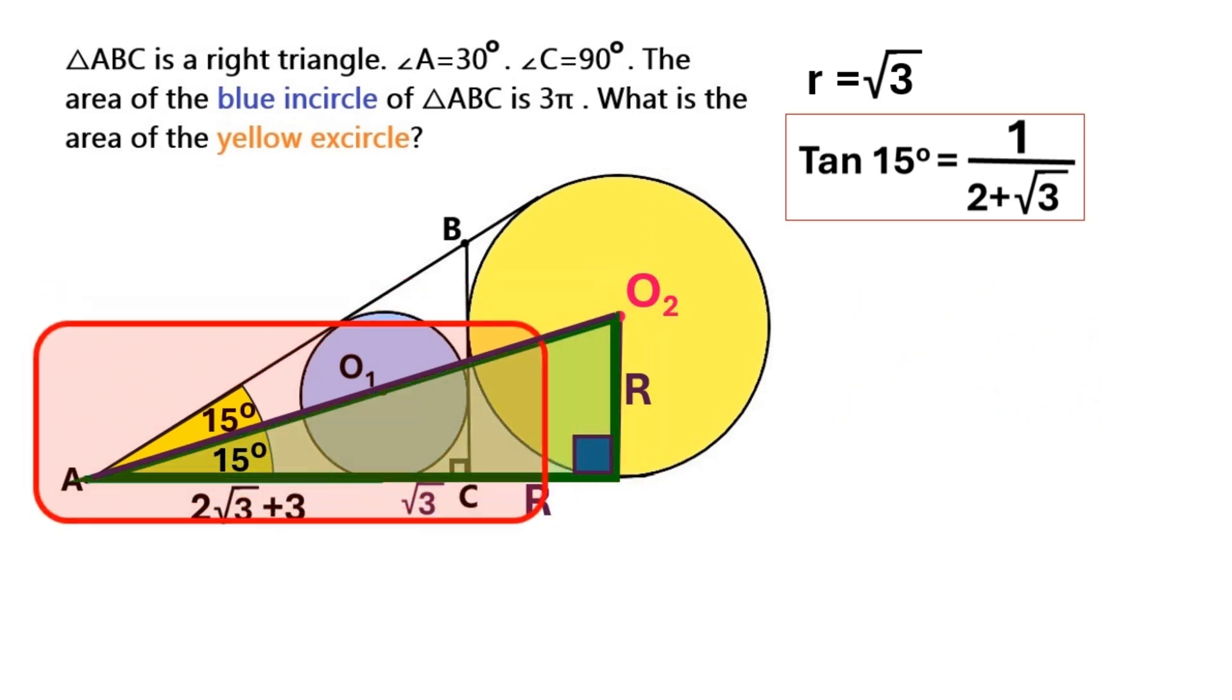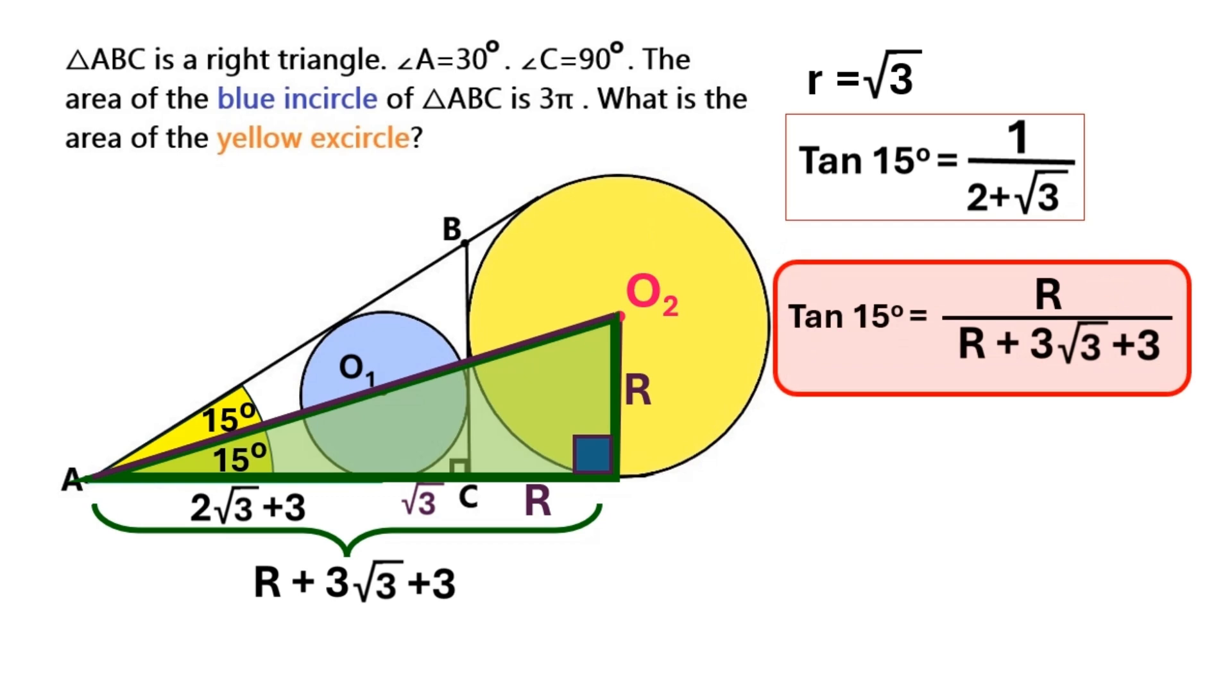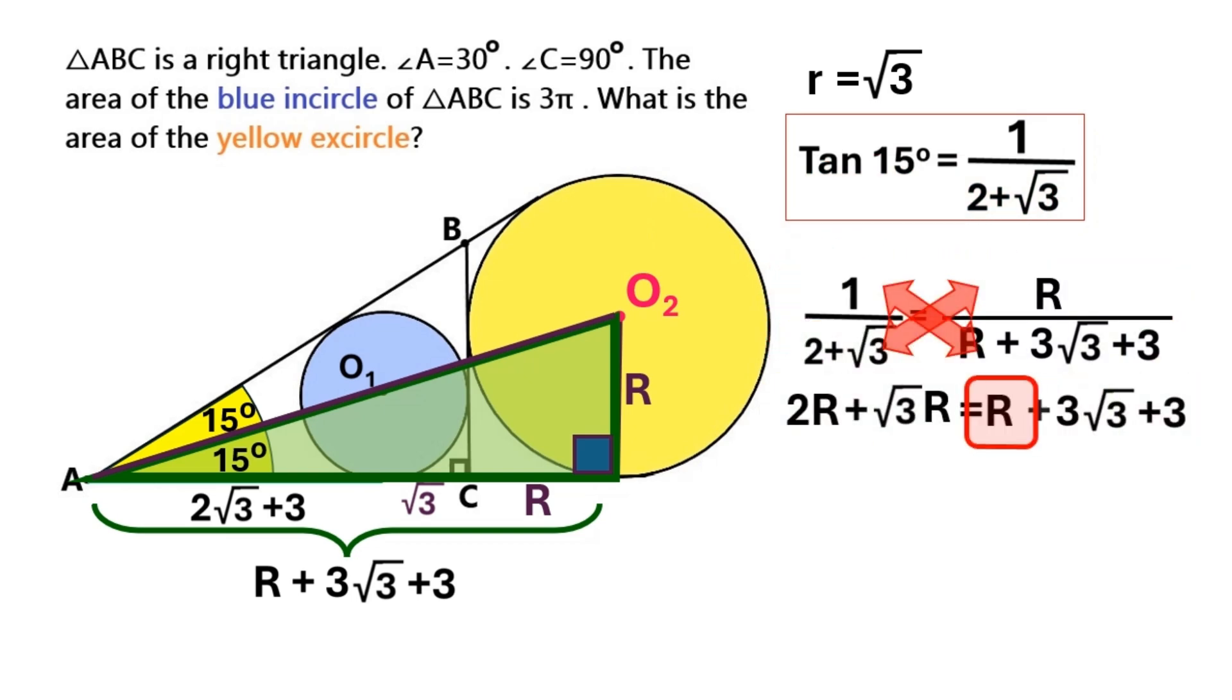And you know what? It's got this 15 degree angle. That means we can divide this distance R by this entire distance down here, and that will basically give us tangent 15. Let's write that down as an equation like this. We already know what tangent 15 is, so let's just replace this with that value. We do the math and voila! Capital R equals 3.